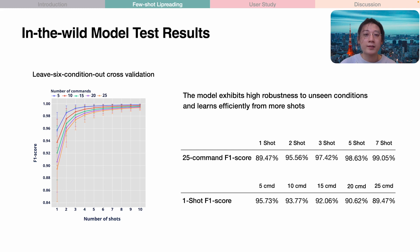We also investigated the effect of the number of commands and number of shots. Cross-validation was performed in a leave-one-condition-out manner, meaning we use data from one condition for training and test on all other conditions. The one-shot model can recognize 25 commands with an F1 score of 89%, and it learns efficiently from more shots. We also observed that more commands make it more challenging to achieve high accuracy, but this gap can be filled by adding a few more training samples.